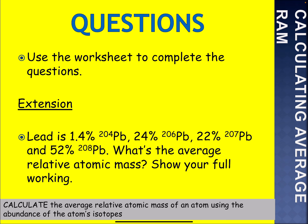Here's an extension question for you. Lead is 1.4% lead-204, 24% lead-206, 22% lead-207, and 52% lead-208. What's the average relative atomic mass? Show your full working out — pause the video here and have a go. This will be worth around three marks, maybe even four.